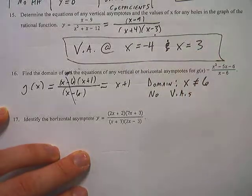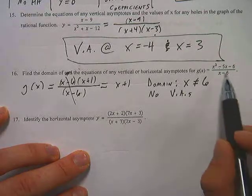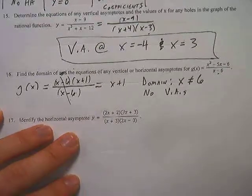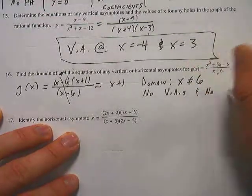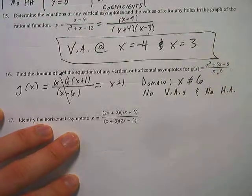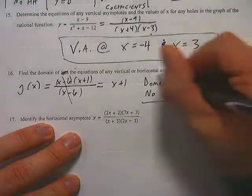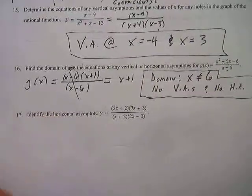There are no vertical asymptotes because there's nothing remaining in the denominator, so there are no vertical asymptotes. And for the horizontal asymptote, since this thing is bigger on top than on the bottom, there's no horizontal asymptote either.